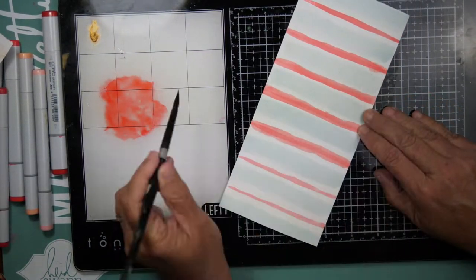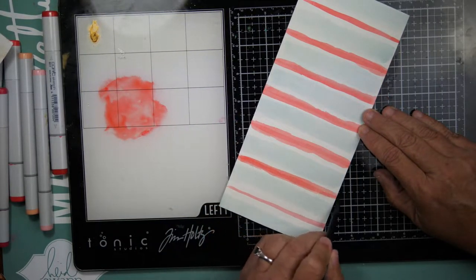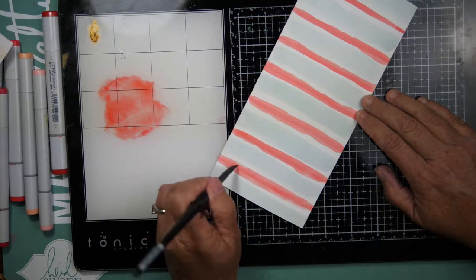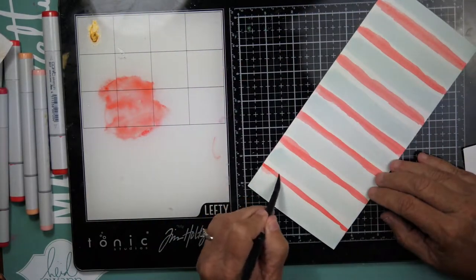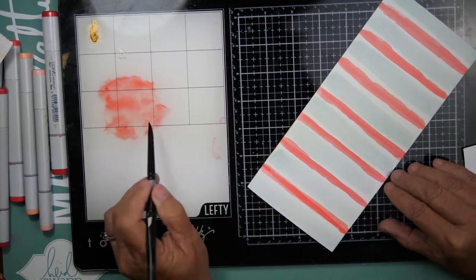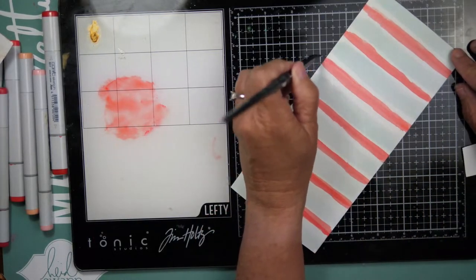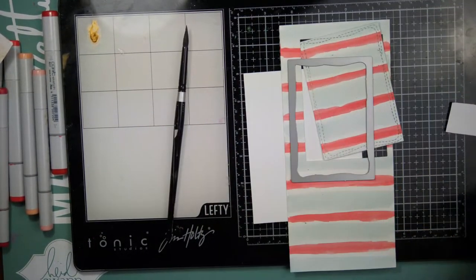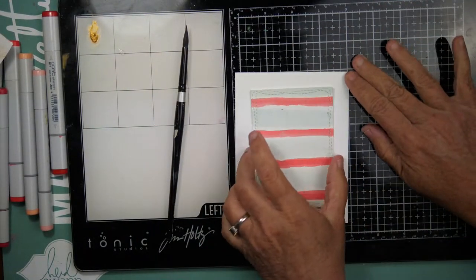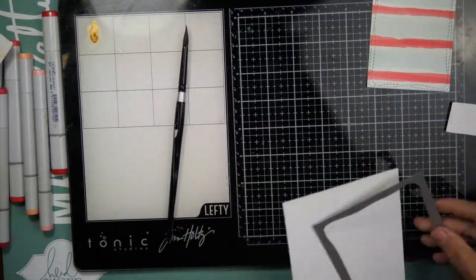And then I'm going to come in with a Simon Says Stamp Wonky Stitch die, and I'm going to use both—the smaller one on this piece. And then I will ink a background again using the Speckled Egg with my brushes to create the background, and then I will cut it out using that larger Wonky Stitched rectangle.